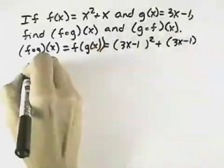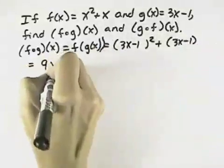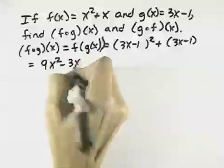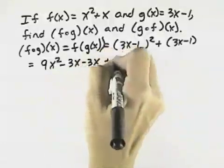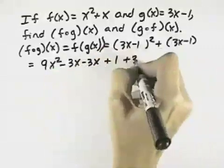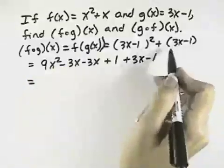And if we simplify that, 3x minus 1 quantity squared means to multiply it by itself, so that we get 9x squared minus 3x minus 3x plus 1, and then we have plus 3x minus 1 for our second part of the problem.